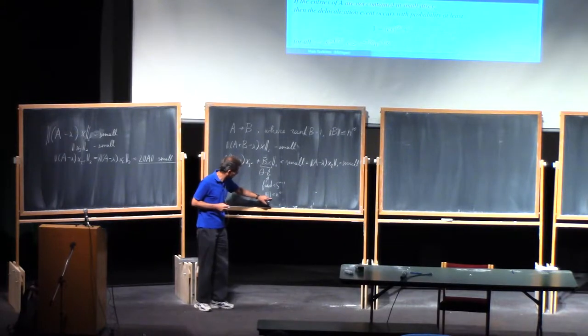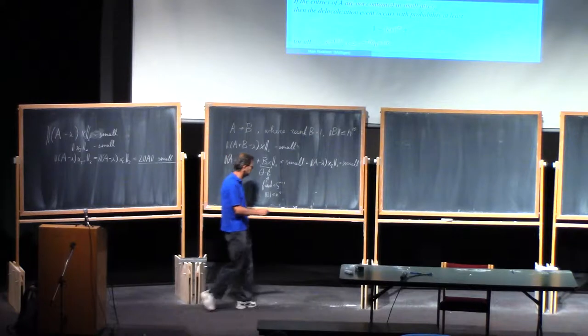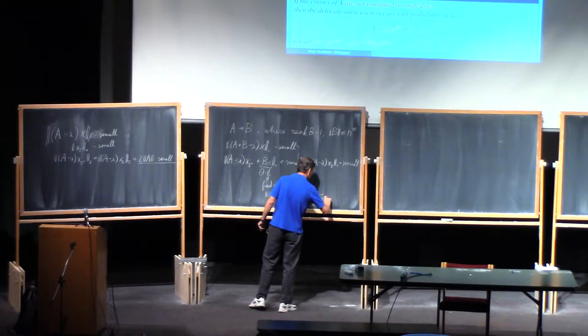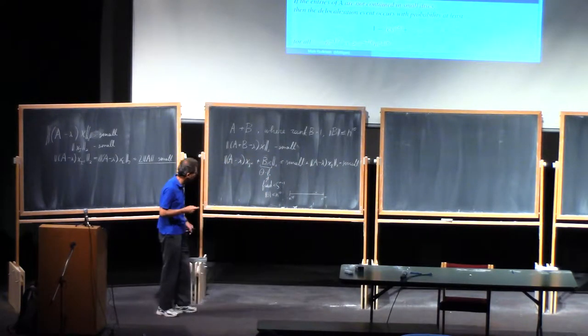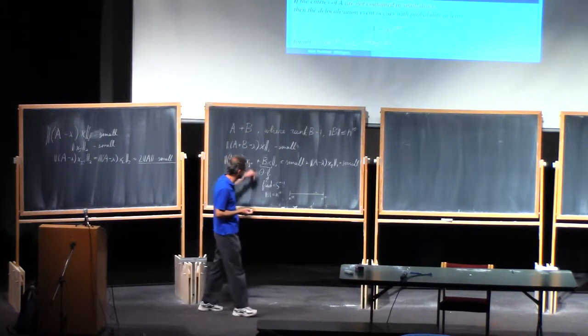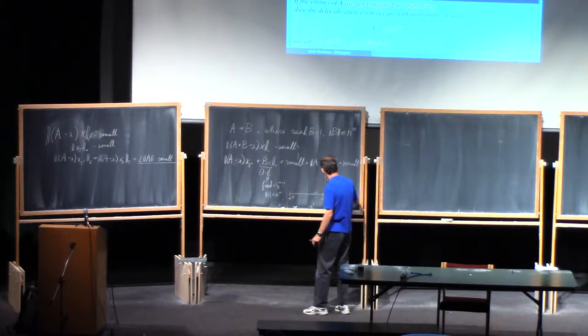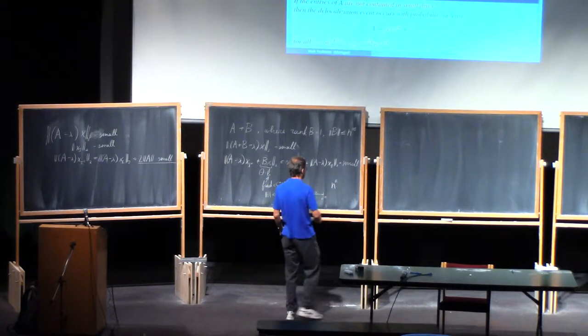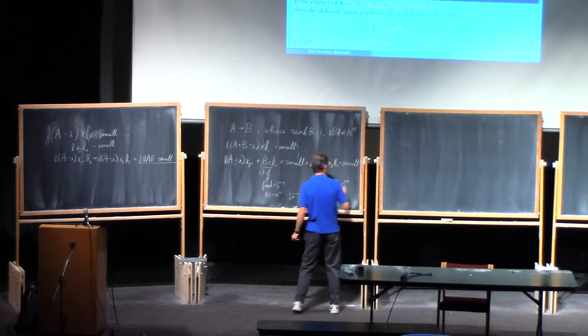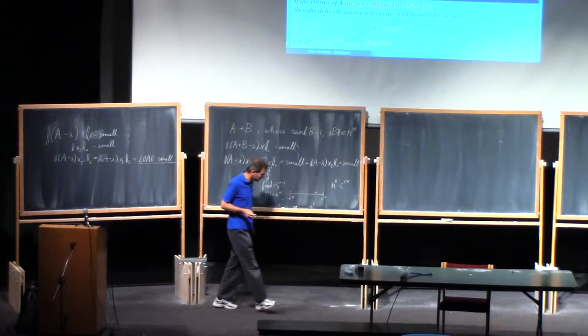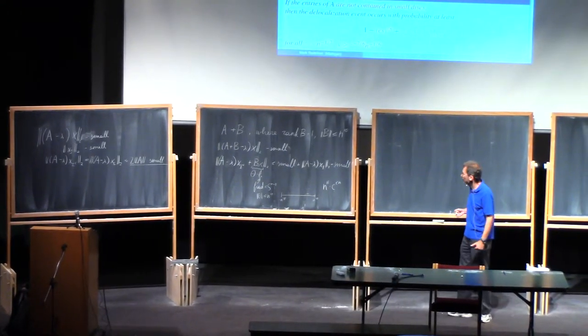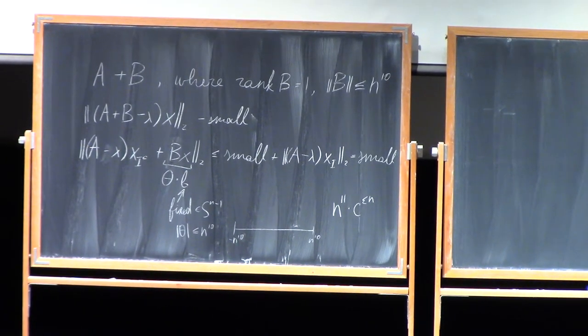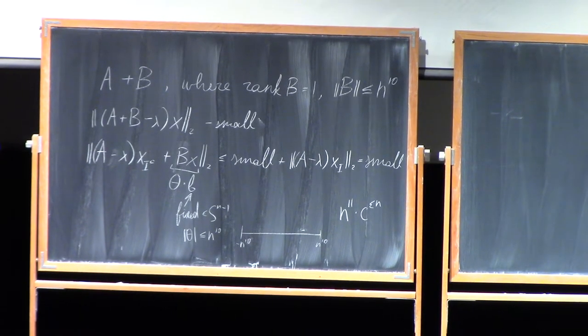So what is the entropy cost here? I have to discretize theta, and theta is a real number. So I have to discretize the interval negative N to the tenth, N to the tenth, and I discretize it with steps one over N. I get the entropy cost N to the eleventh, and I will have to multiply this by the failure probability, which is a constant to the power epsilon N. If epsilon is not too small, this N to the eleventh will be easily absorbed. So we can afford matrices of rank one perturbations as well.